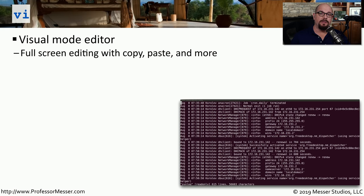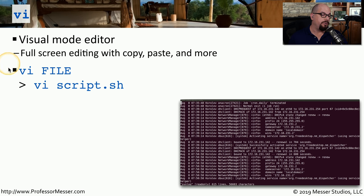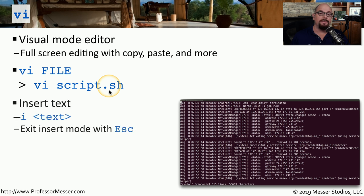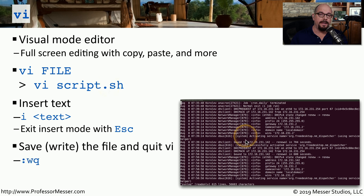Linux uses many configuration files to change application settings. To edit those files, you may want to use the full-screen editor VI — the visual mode editor — which supports copy, paste, and many other capabilities. To start it, use 'vi filename', for example 'vi script.sh'. Once inside, insert text by pressing I and typing. When finished inserting, press Escape to exit insert mode. To save and quit, type a colon to enter command mode, then W to write/save the file, and Q to quit the editor.